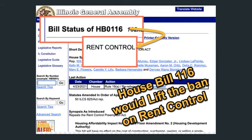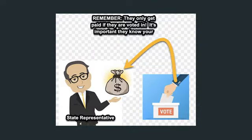Right now in the House of Representatives, there is House Bill 116 going through the House as we speak. As you can see magnified, it is about rent control. What it would do is lift the ban on rent control. If you didn't watch the other video, you definitely need to, because it explains the history of the ban. It would lift the ban so that if a city or town in Illinois wanted rent control, they could get it.